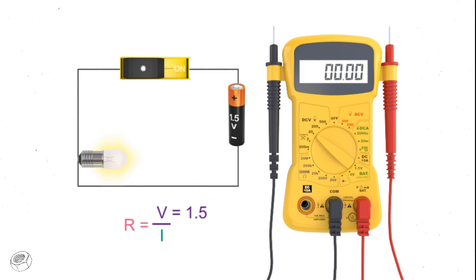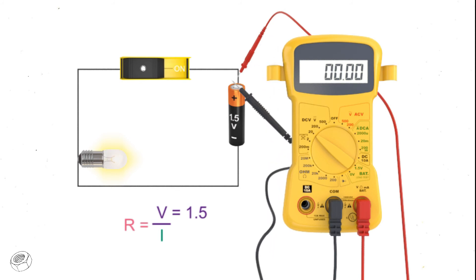After visually inspecting the terminals of the battery to determine the polarity of the battery, place the red probe across the wire on the positive side of the battery and the black probe across the negative side. You should get a reading of around 1.5 volts. The voltage of the battery is 1.57 volts, about what we would expect.